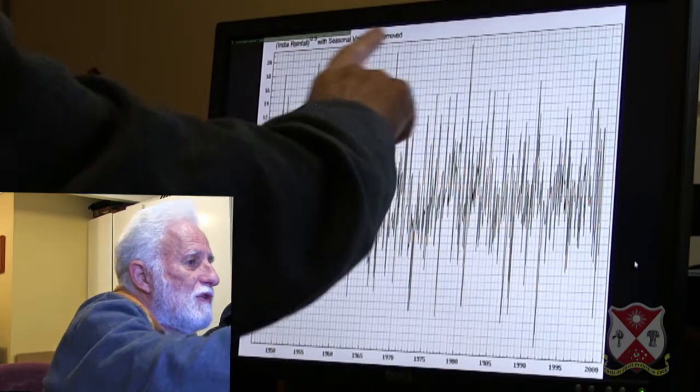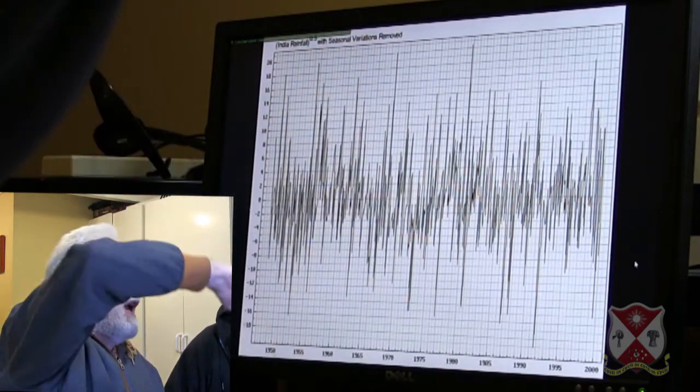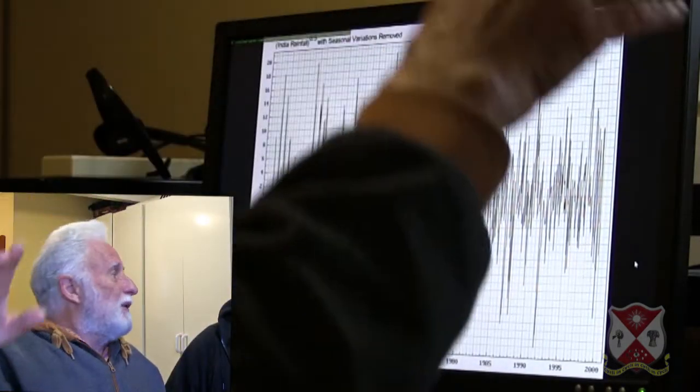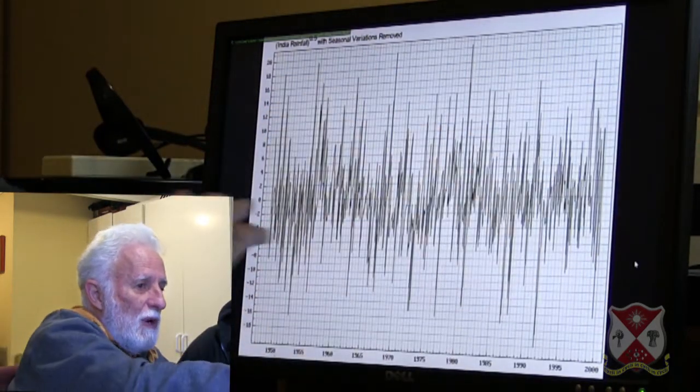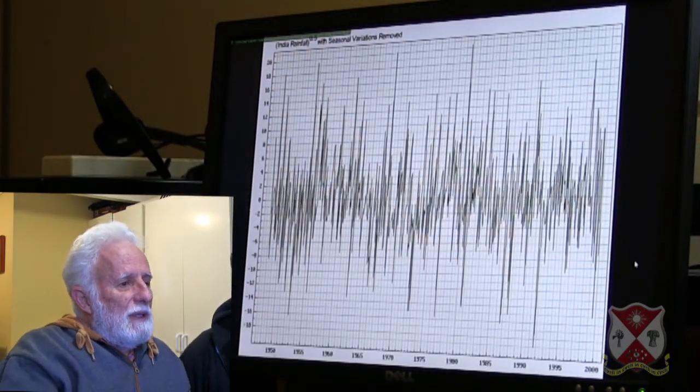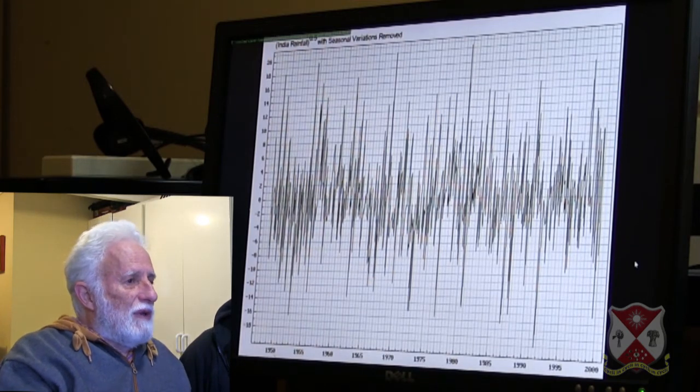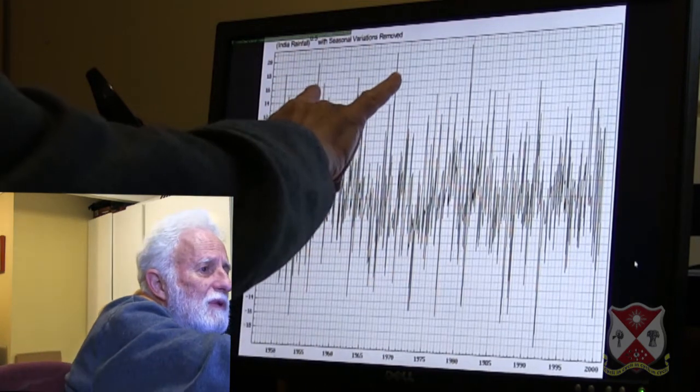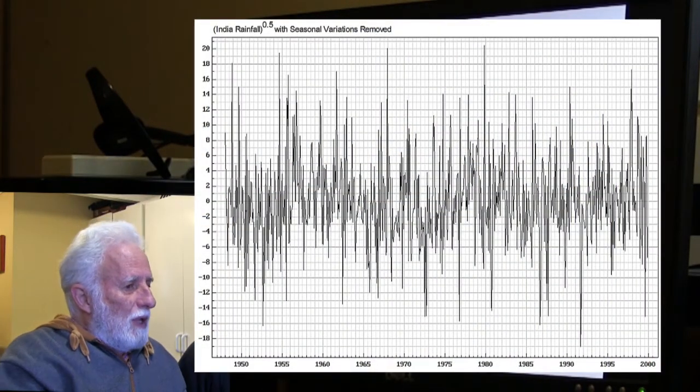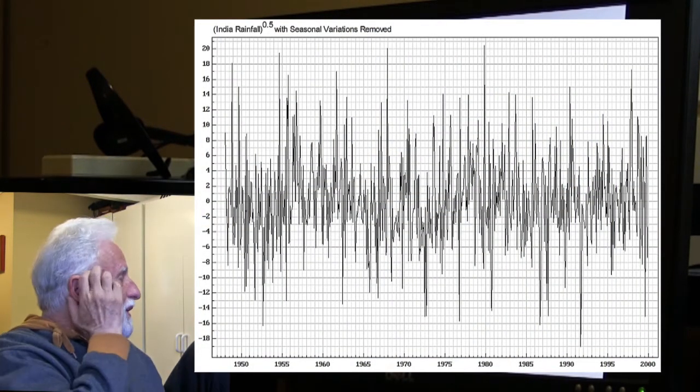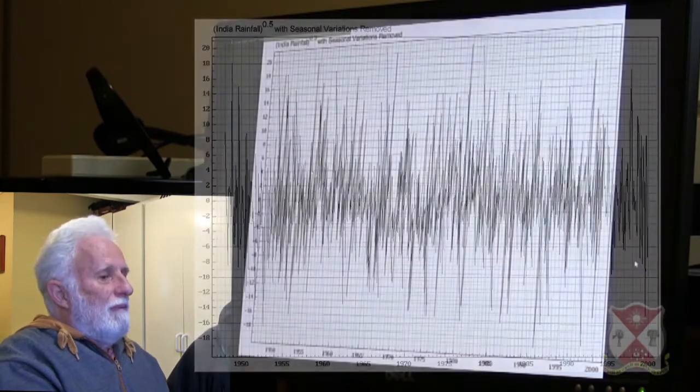And then with the seasonal variations removed. So at that point, I then take the average annual cycle that occurs throughout the whole thing, and I take it away from it. And this is what we end up with. So now, there's not so obviously anything going on. But it's something we can look at now for other cycles than the ones strictly related to the year.